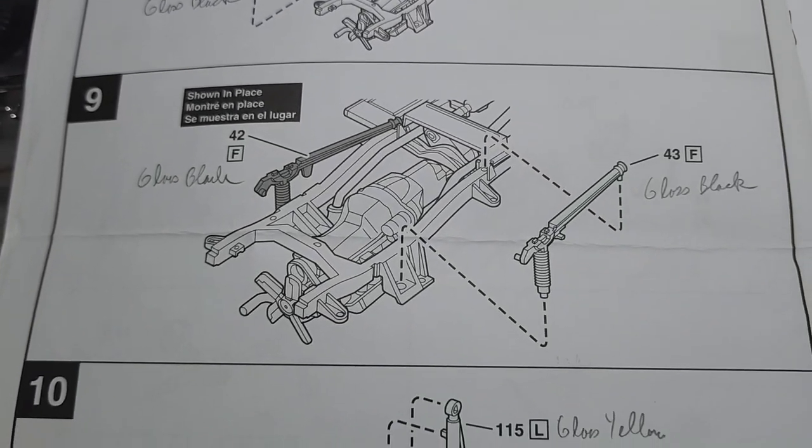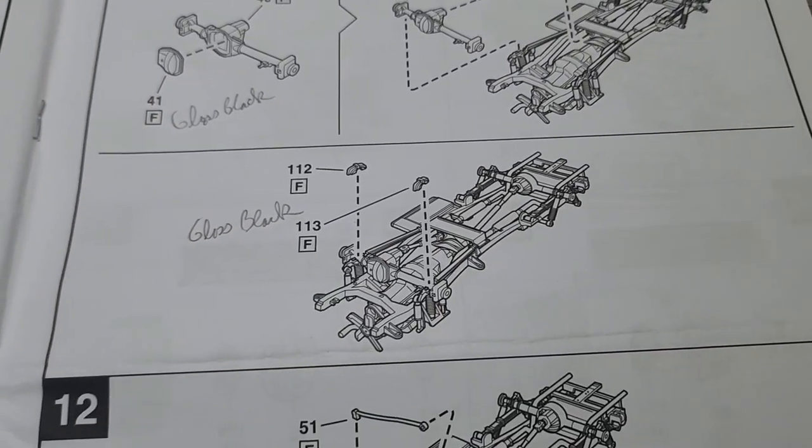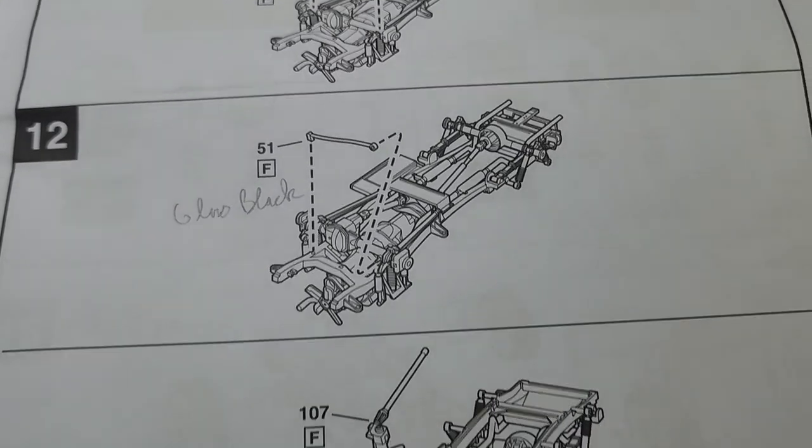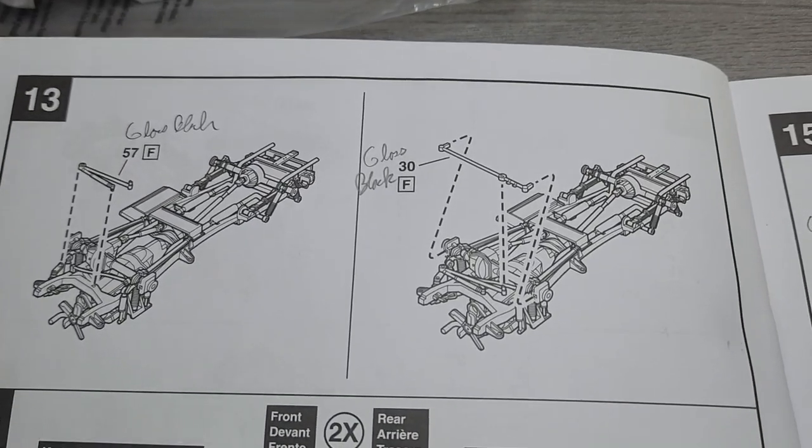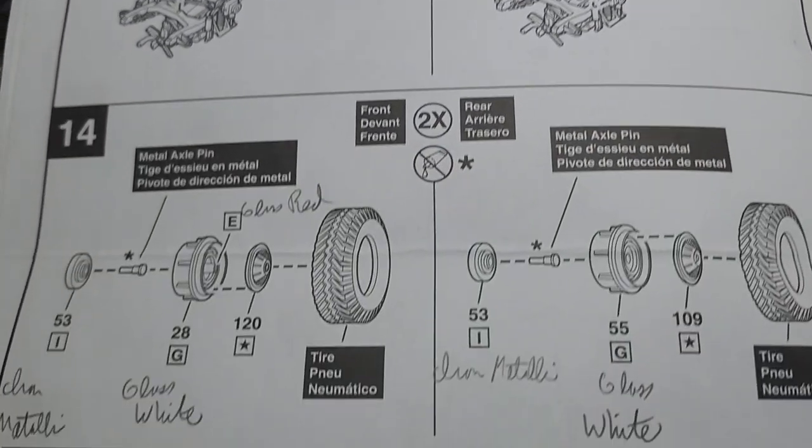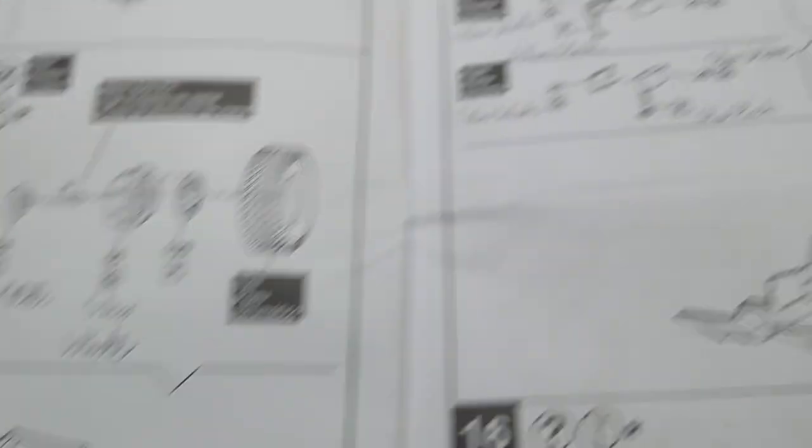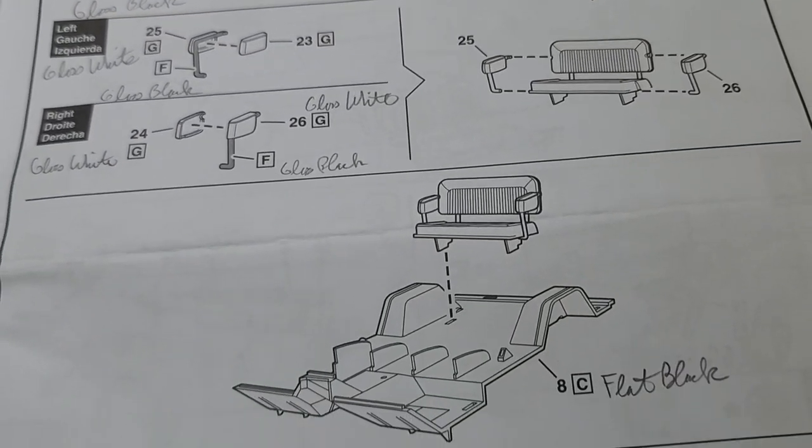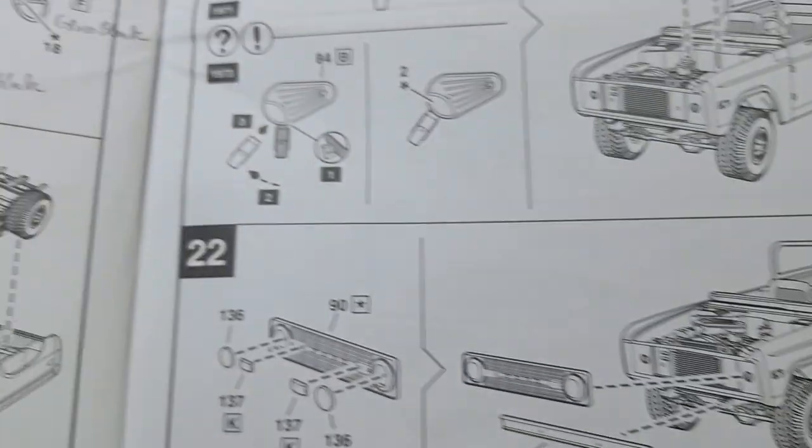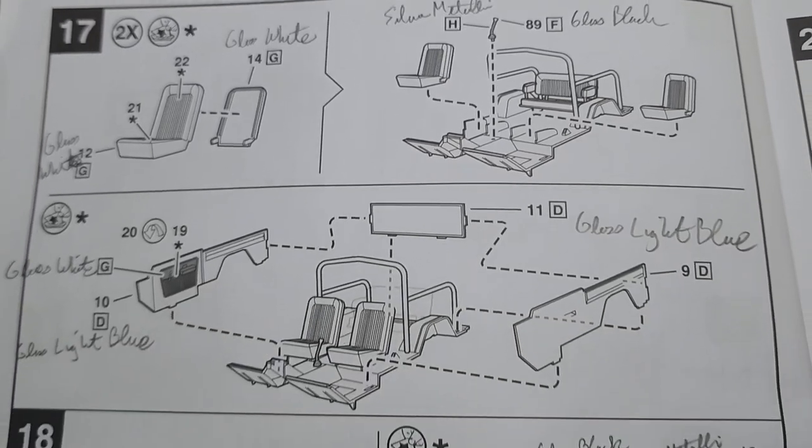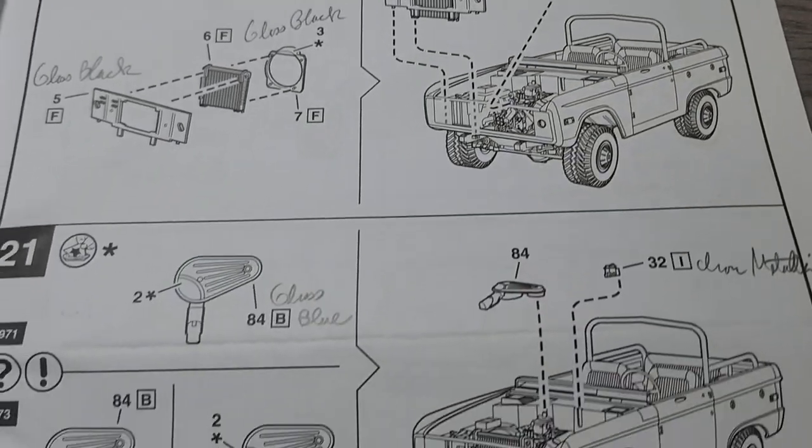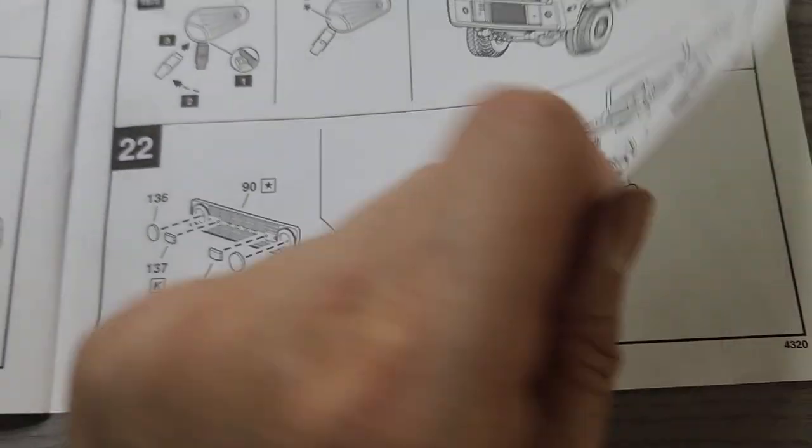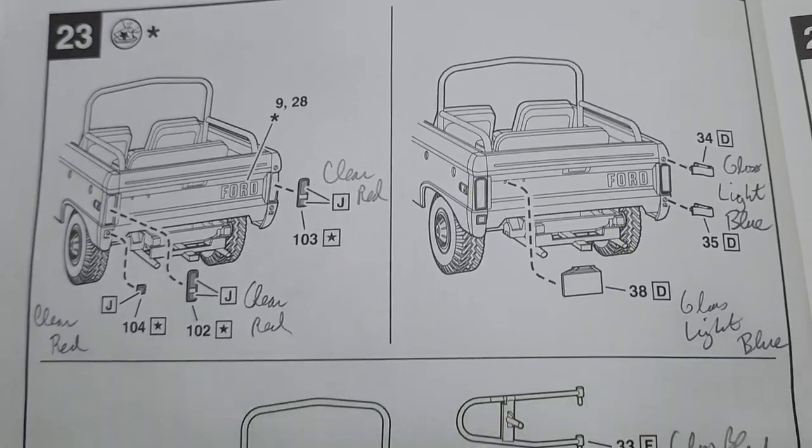Doesn't seem, the instructions seem to be a lot, but it's actually not because each step is only a few parts. It's not like one exploded view with multiple, multiple pieces. So it looks like a lot of pages, but in actuality, it's because they broke it down to one or two pieces per step.